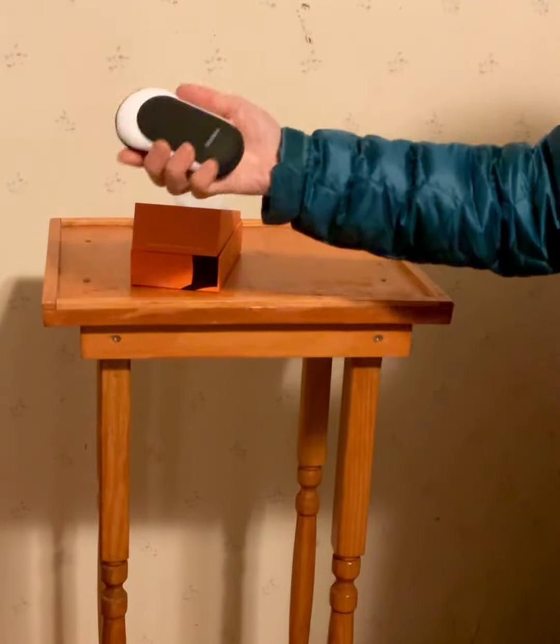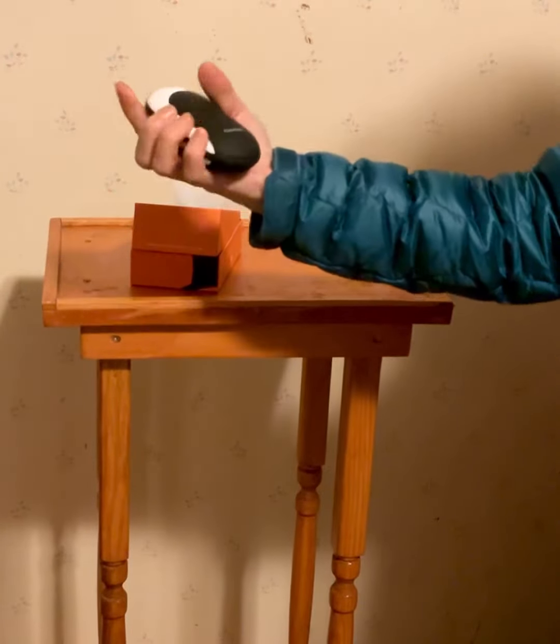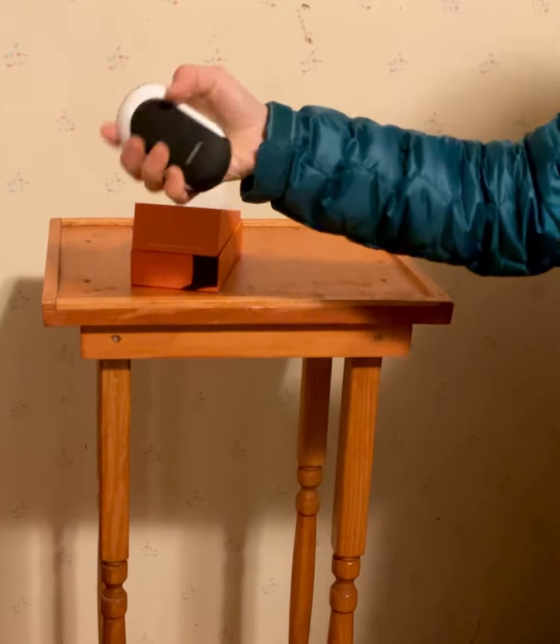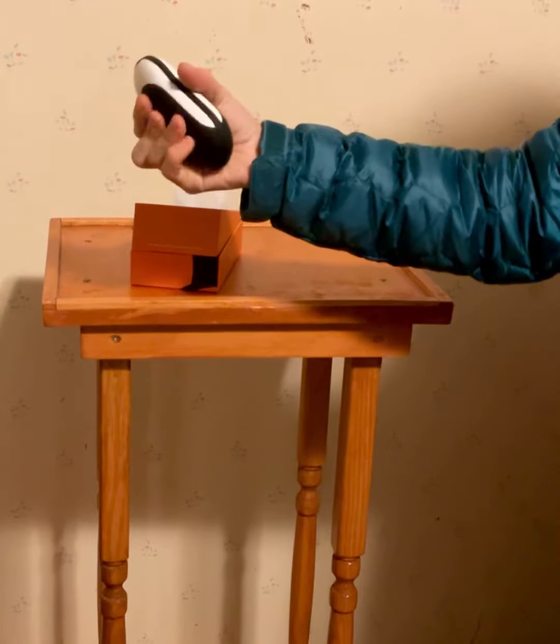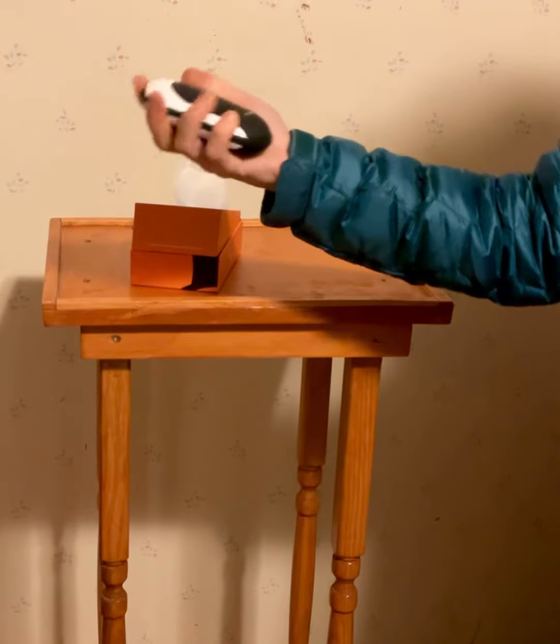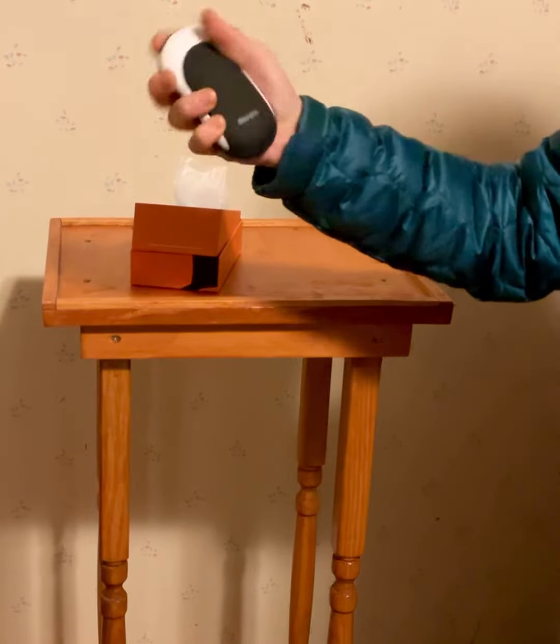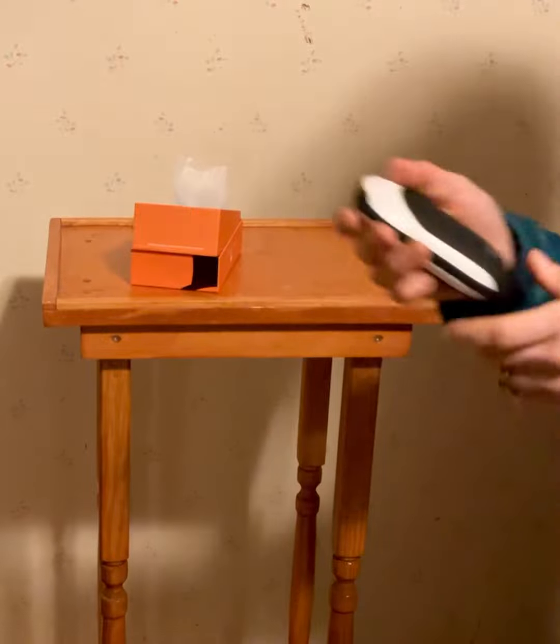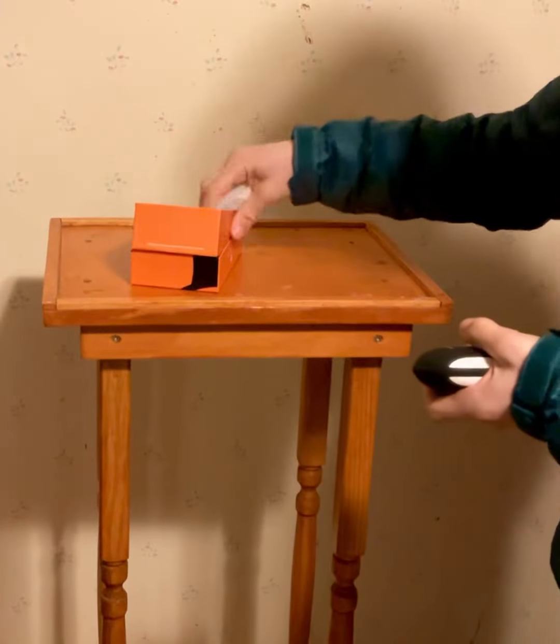This is the Okupa hand warmer. This is a very large one compared to some of the others, but what's great about it is that it has 10,000 milliamp hours of battery strength. You can get 15 hours on the low heat setting. There's three different settings.